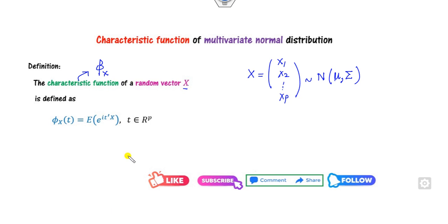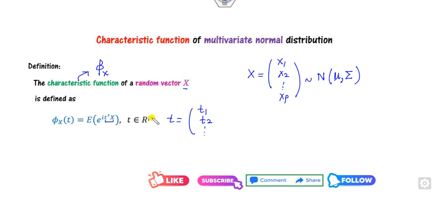The characteristic function of X is defined from the random variable T, the generating parameter, and it is defined as the expected value of e raised to the power iota T transpose X. It is T transpose because T is a vector. When you multiply two vector quantities, T will be (T1, T2, ..., TP), since the dimension is P, so T is a P cross 1 matrix.